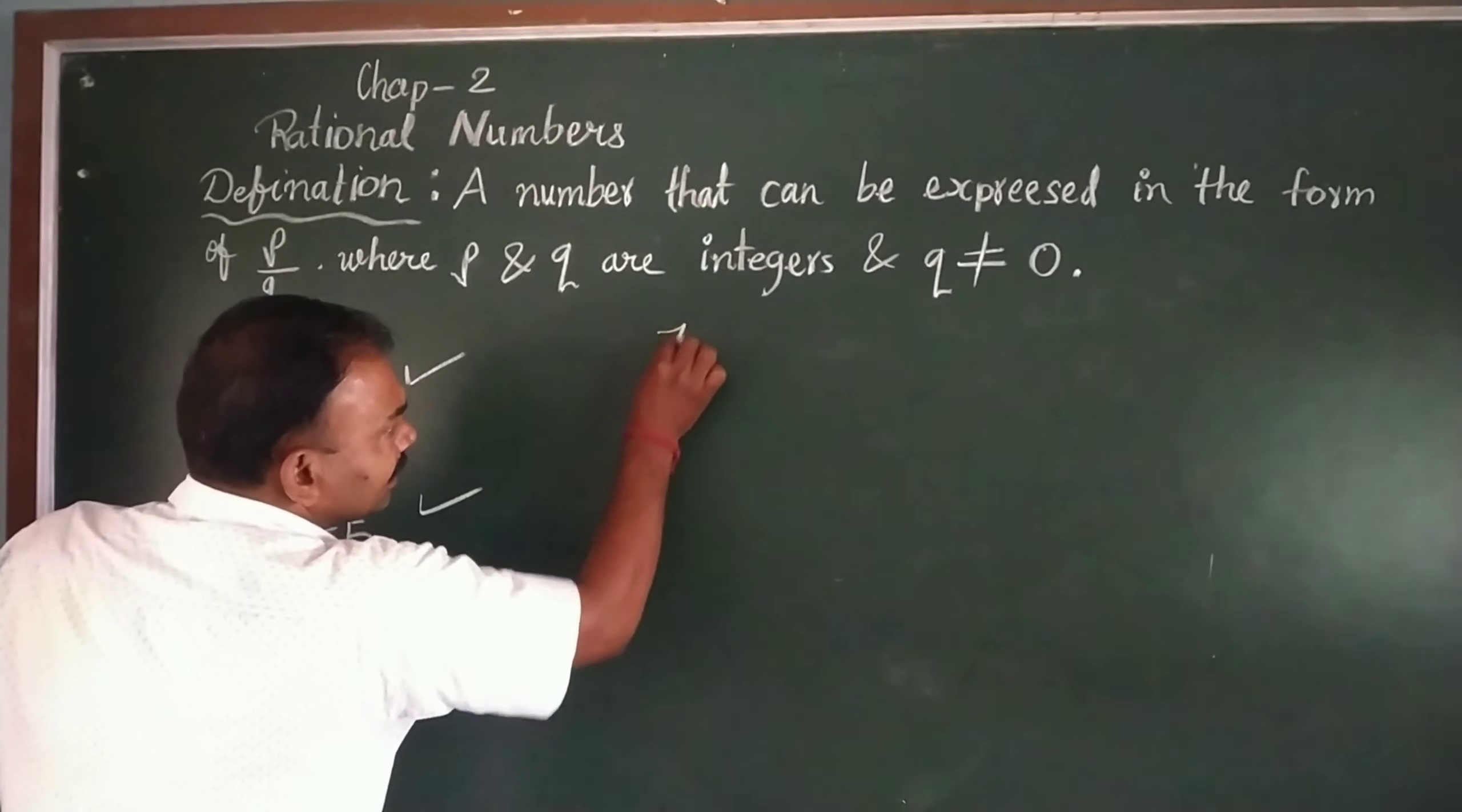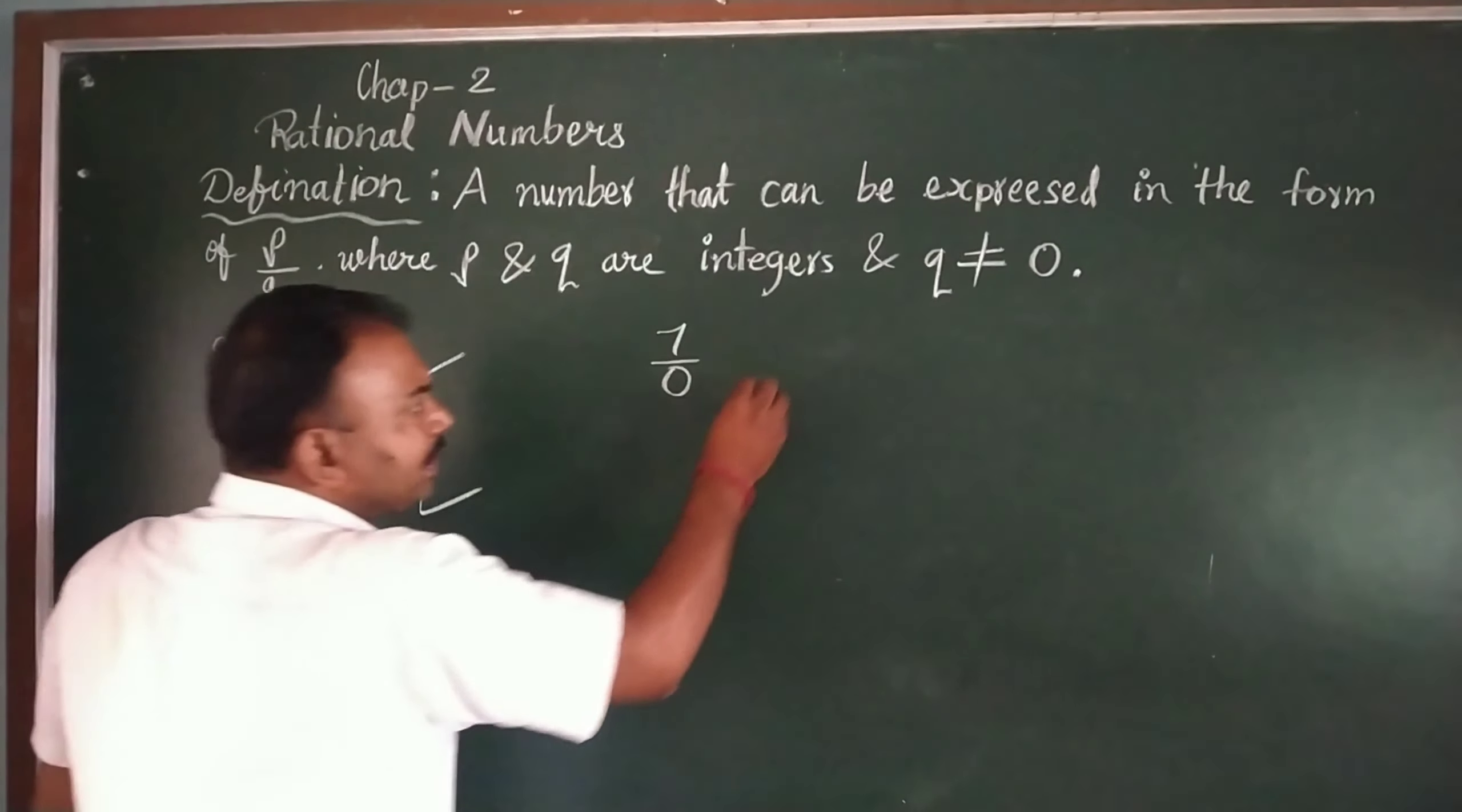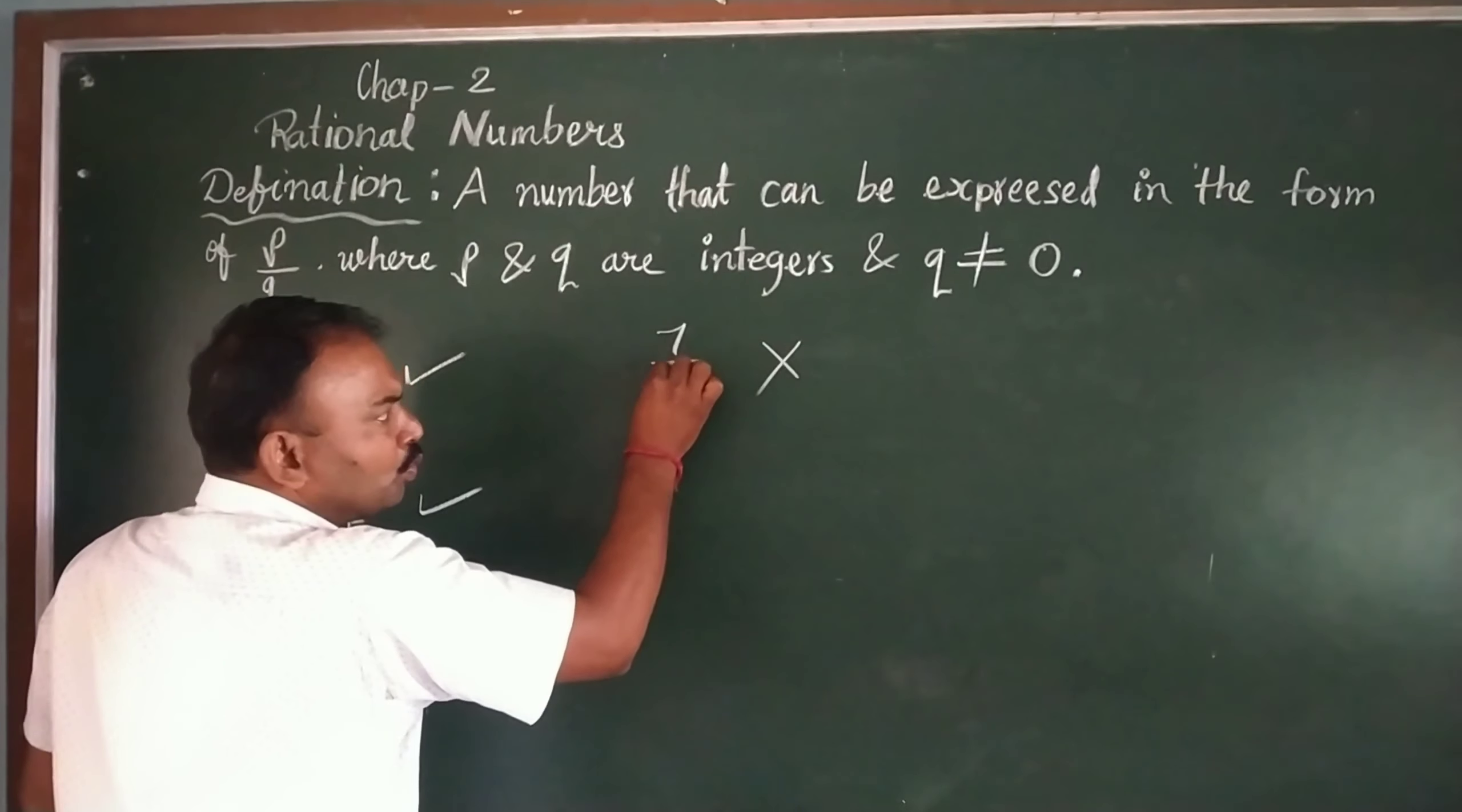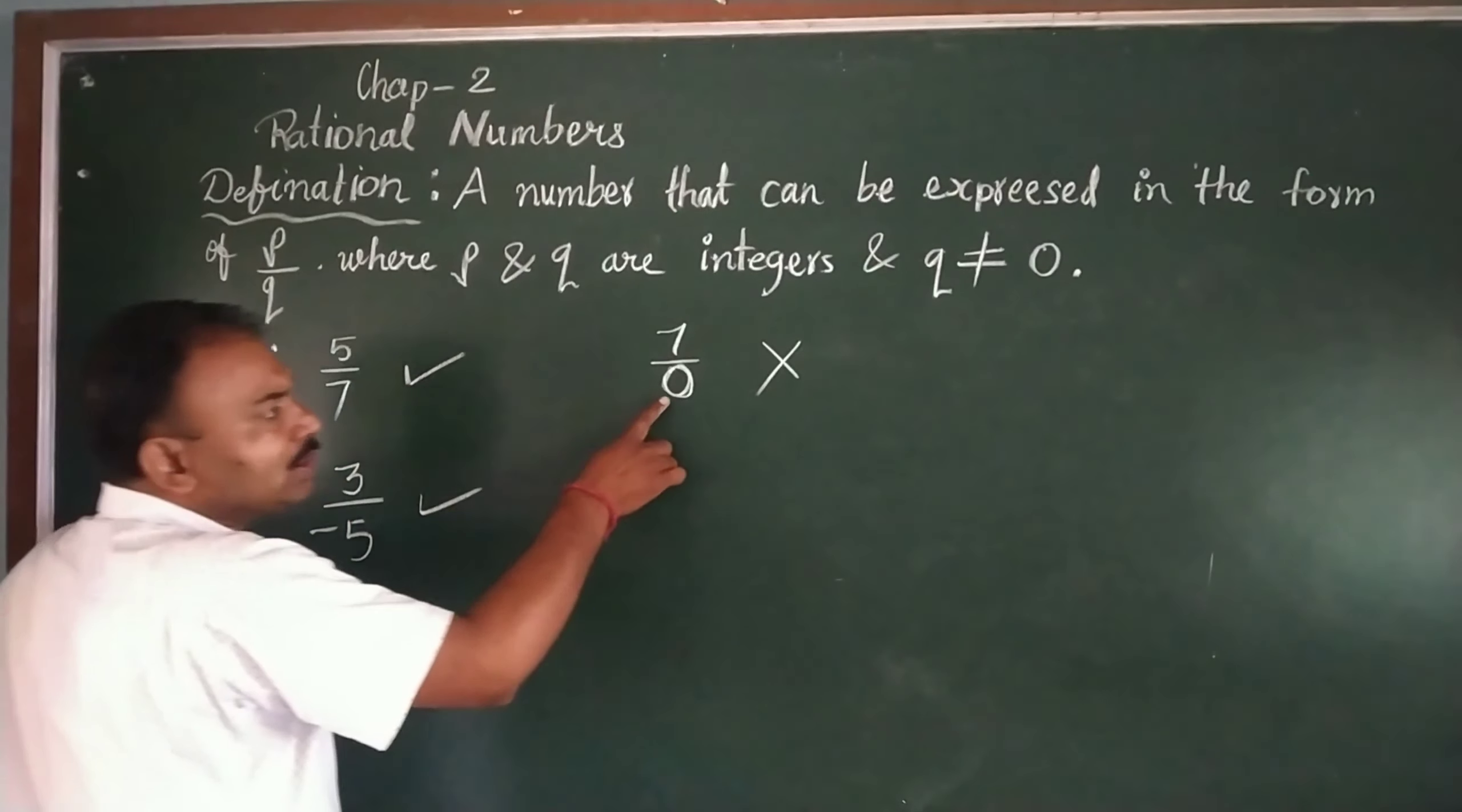And if we take more example, like 7 upon 0. Then, definitely this will not be our rational number. Because here the value of Q is 0.